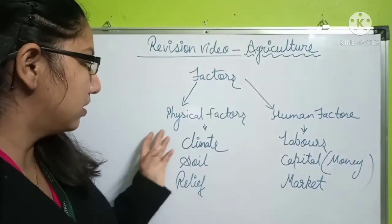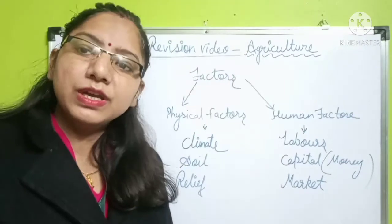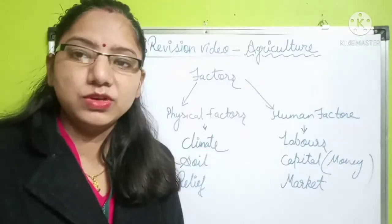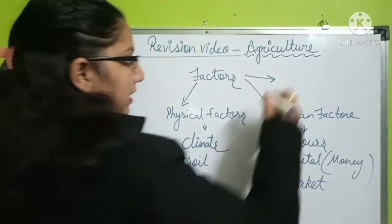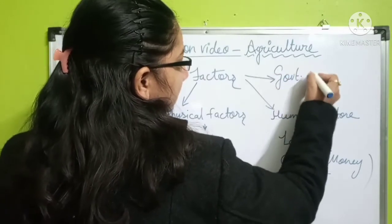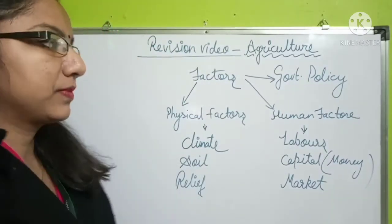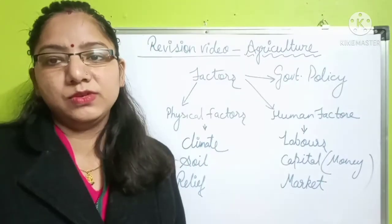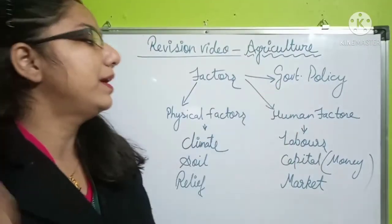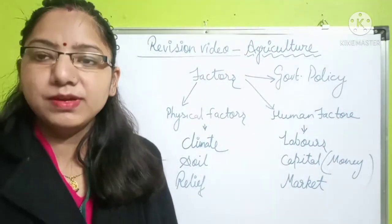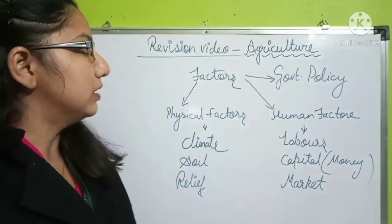There are two main types of factors influencing agriculture. But nowadays, in many countries, the government has also given many types of policies to improve the agriculture field. So the third factor is government policy. The government is now providing subsidy to the farmer, along with many types of rules, regulations, and facilities for the farmer.